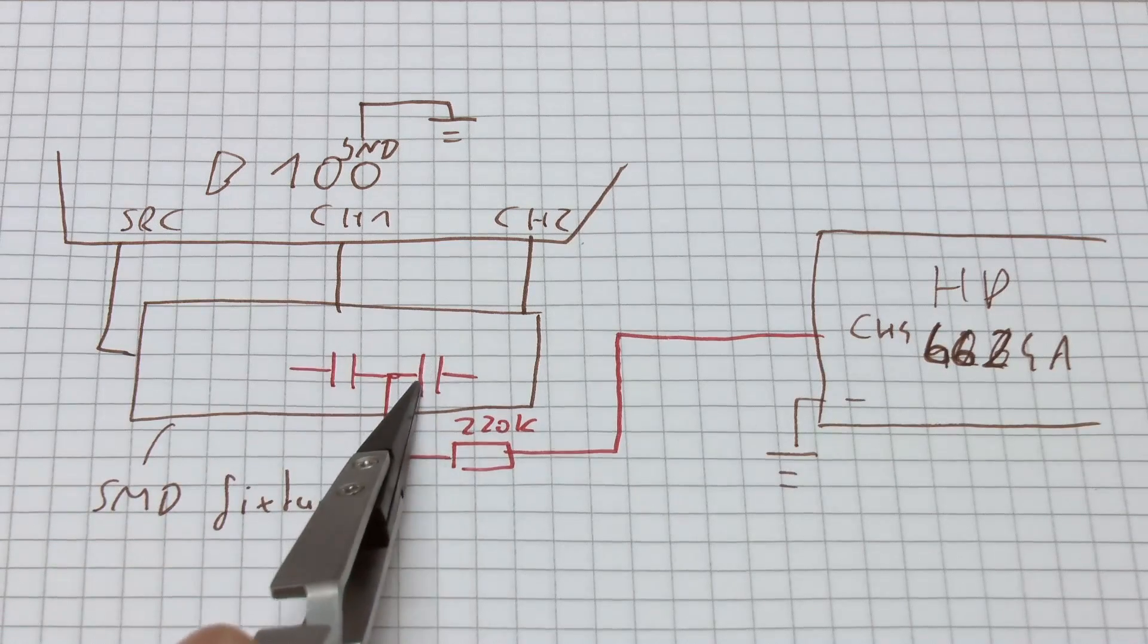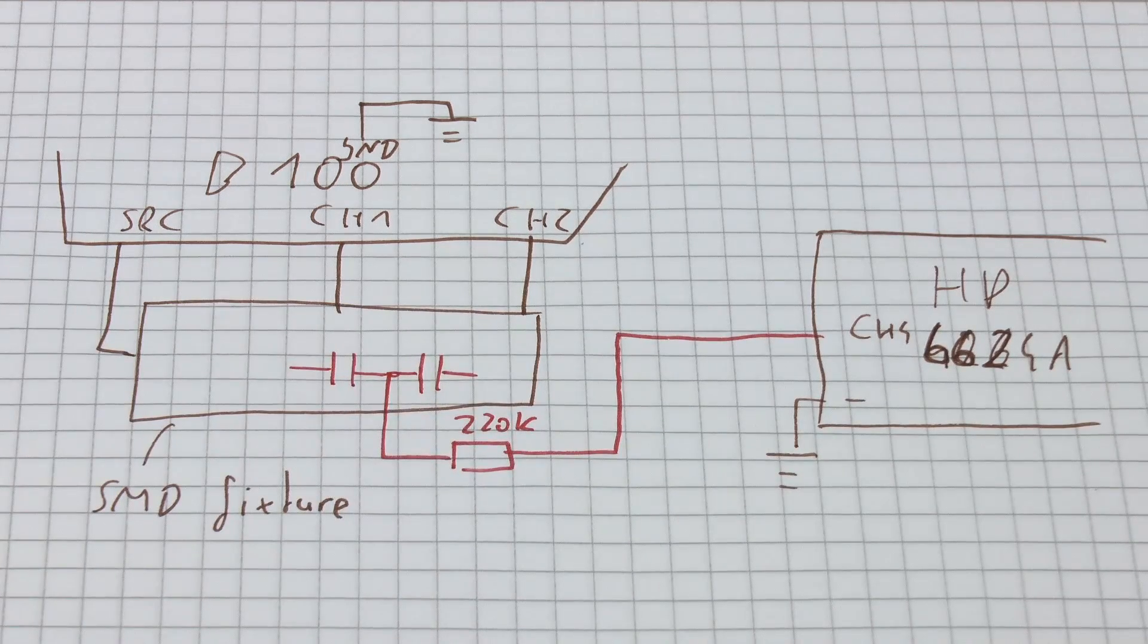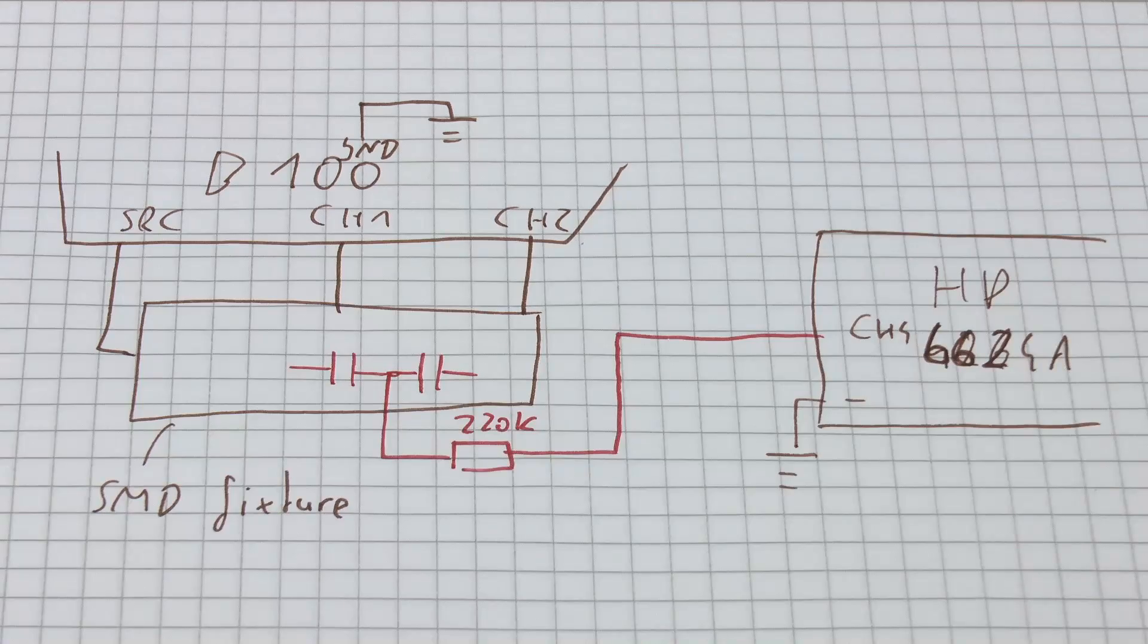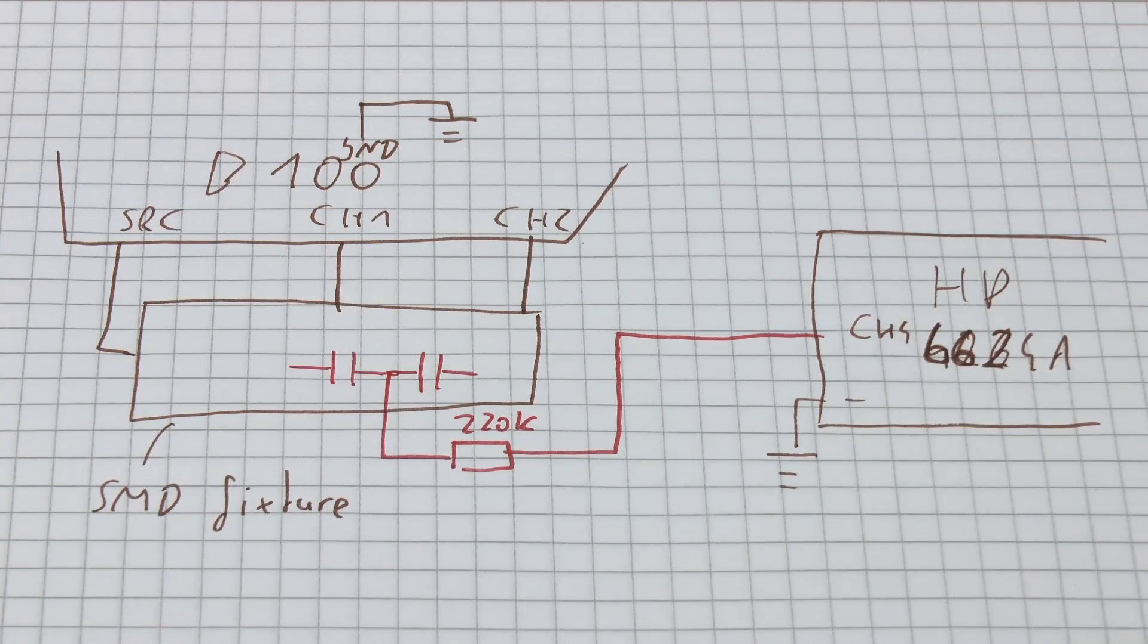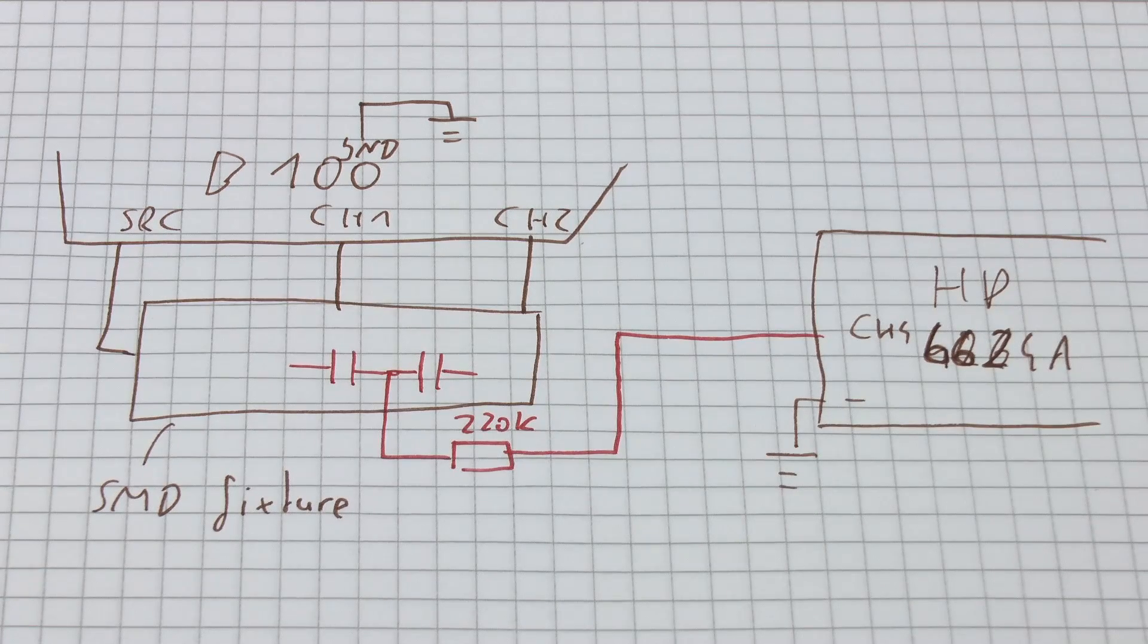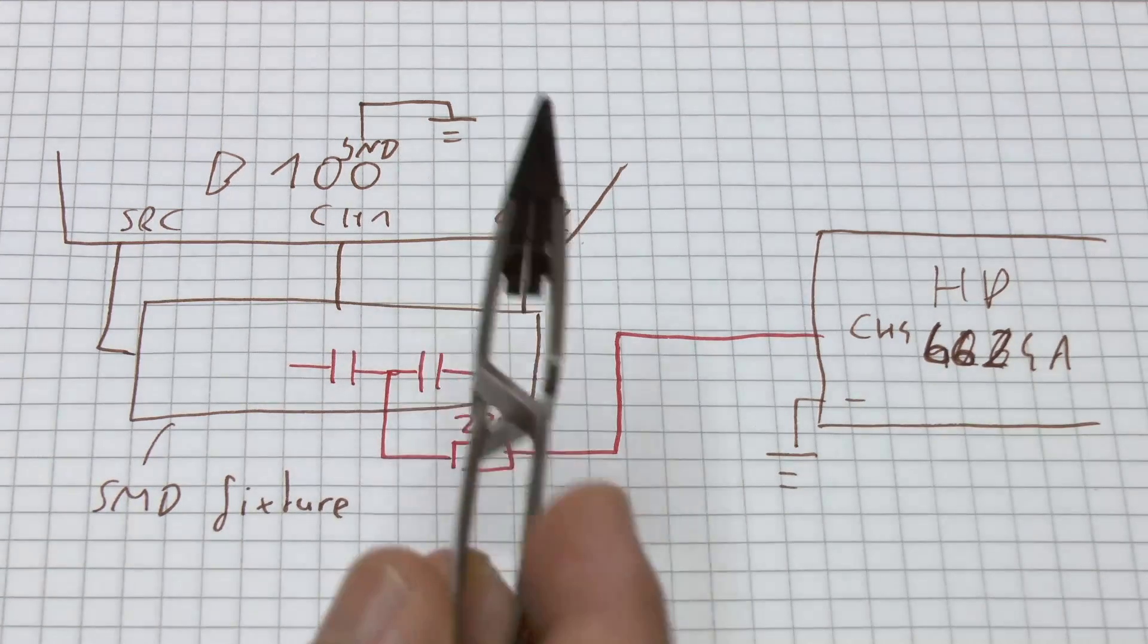But there is a problem. You see, we've got these two guys, they are in series. So the Bode 100 up here, of course, he only sees half of the total capacitance.